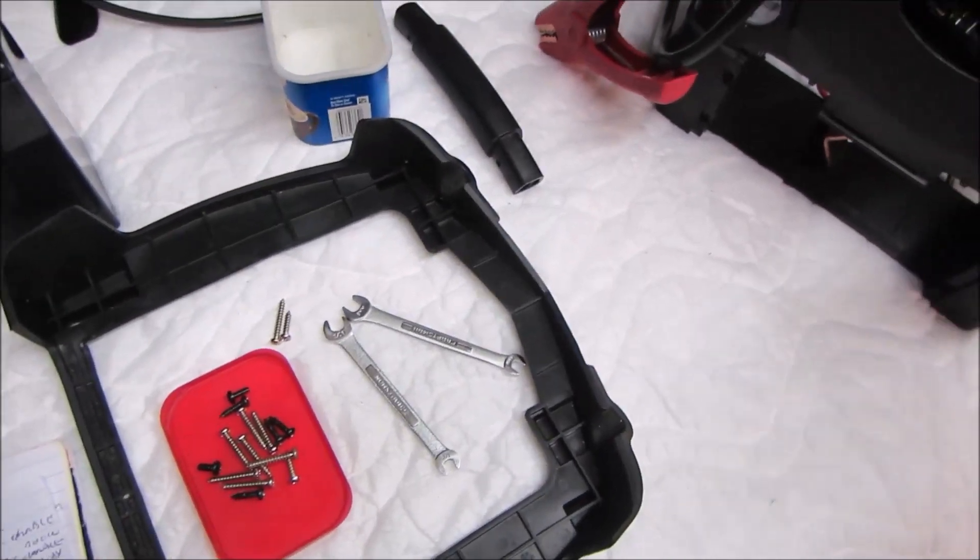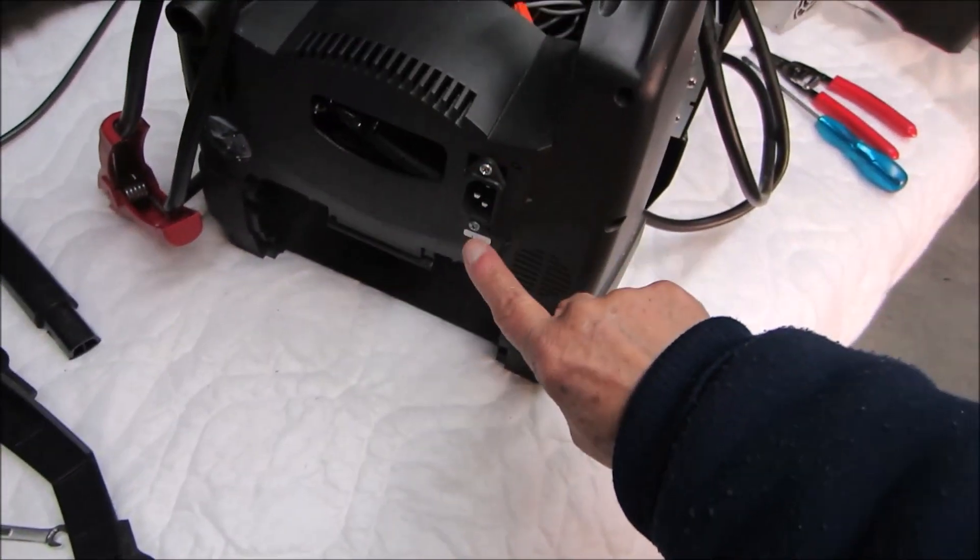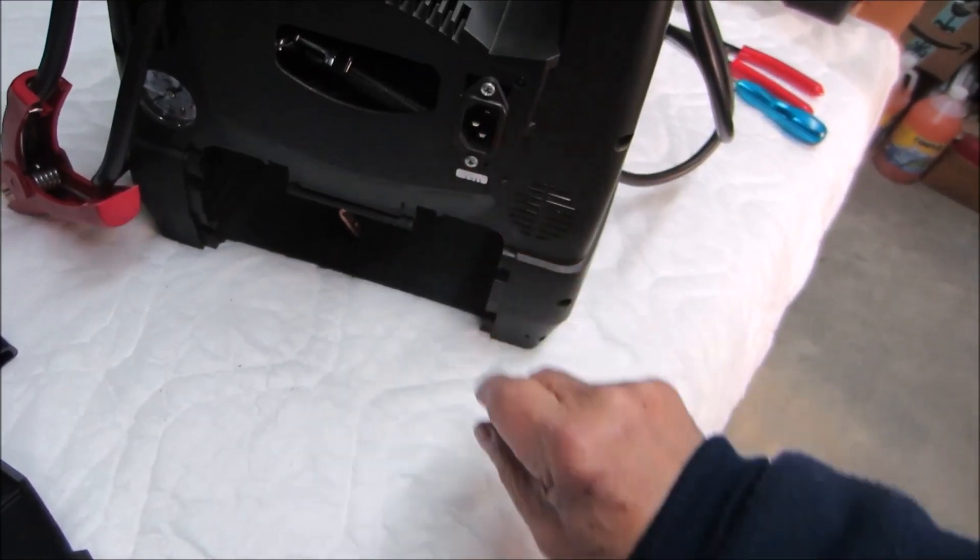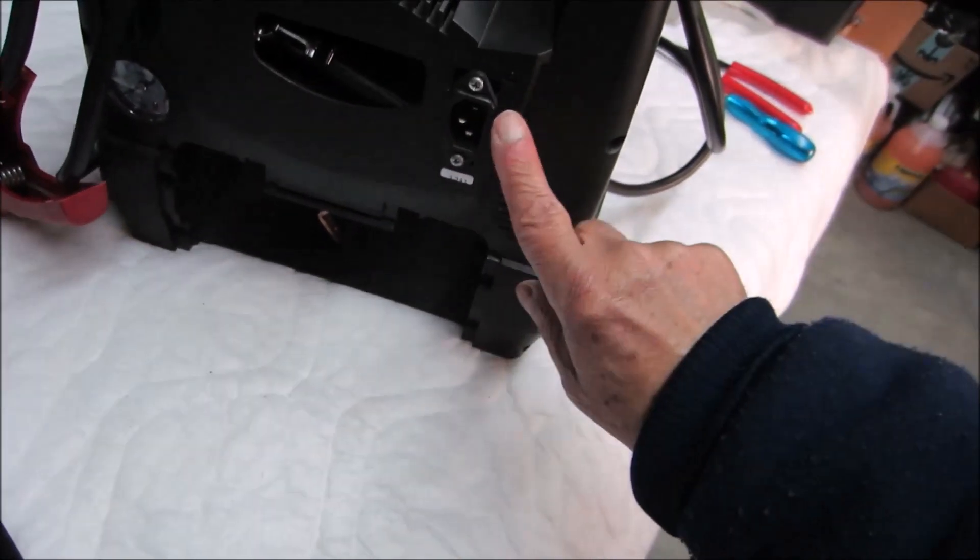Okay, we've got it apart. Now it's pretty easy to unscrew and remove the broken power socket. How are we going to fit the new power socket into the back cover?